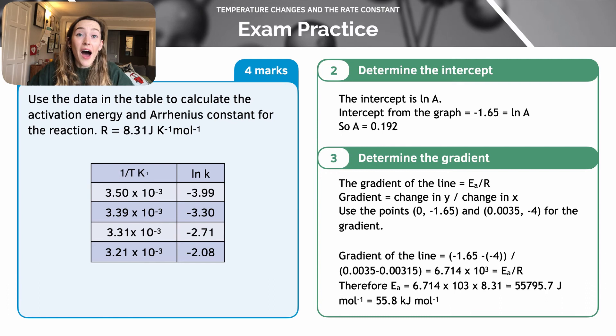Using the graph, I can see that the intercept, the y-intercept, is the same as the natural log of A. So I need to convert the natural log of A, the value, which is -1.65 from the graph, to A. So I'm going to raise both sides by e. So that means A is equal to e to the power -1.65, which is equal to 0.192. So that's my Arrhenius constant. That's the first part of the question done.